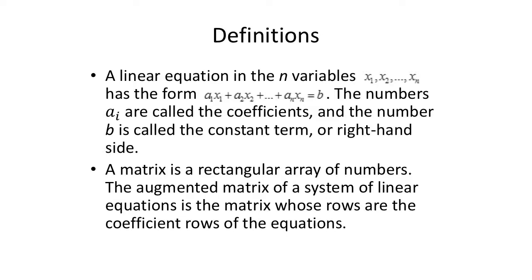Let's start with a couple of definitions. A linear equation in the n variables given by x1, x2, and so on, up to x sub n, has the form a1·x1 + a2·x2 + ... + an·xn = b. The numbers a1, a2, a3, etc. are called coefficients.